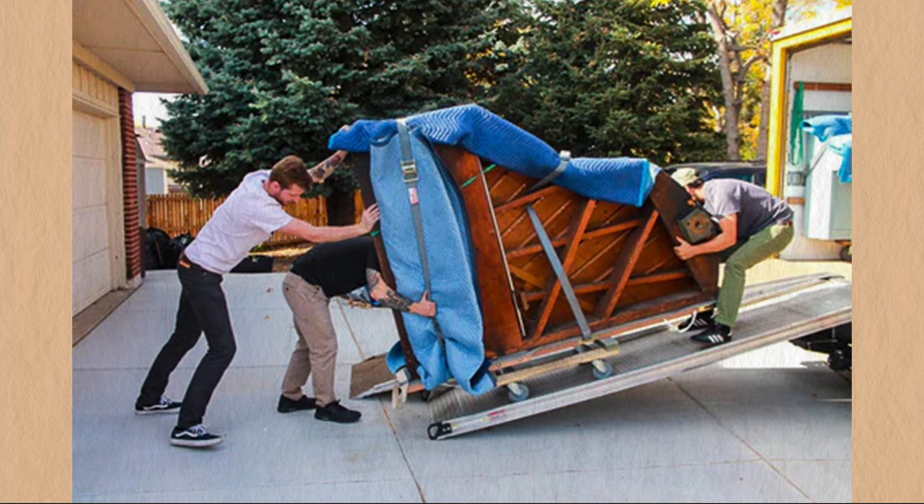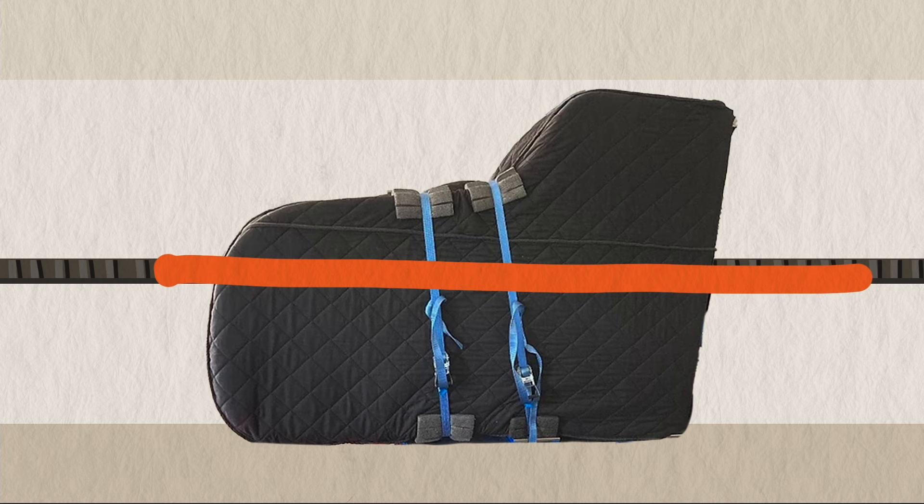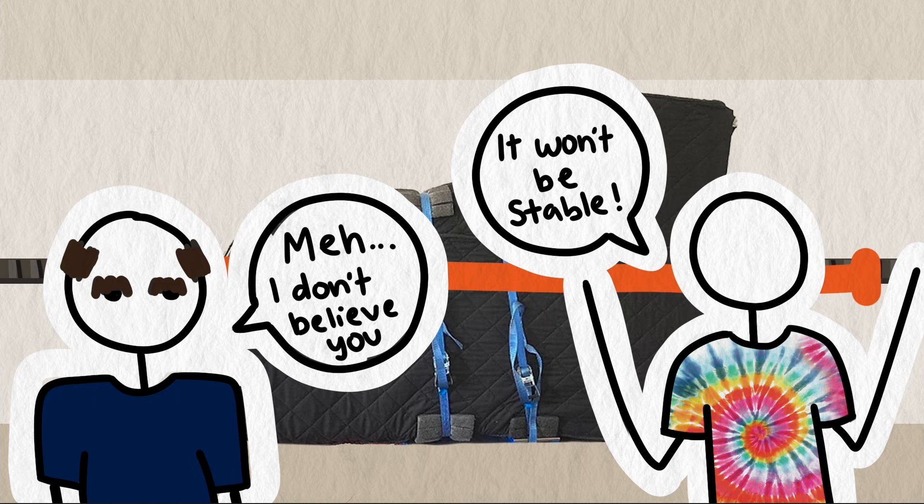We took the legs off, put the piano on its side, and rolled it into the trailer and up against the wall. This is where things went wrong. My uncle started to strap the piano in and did it something like this. I told him that it won't be stable and the piano could move if we did it like that, but he didn't believe me.